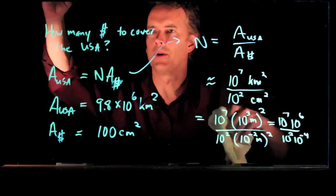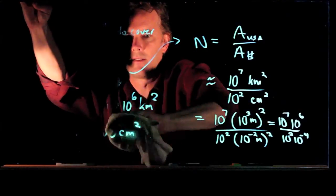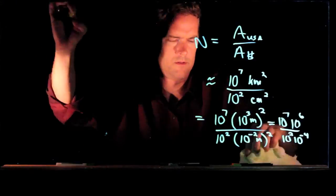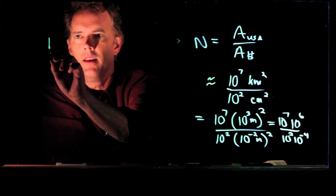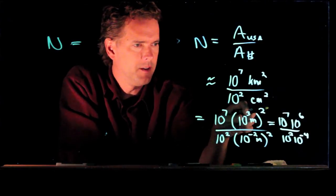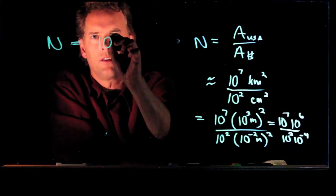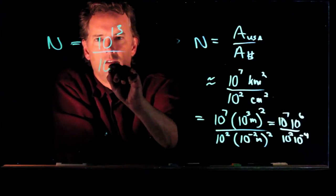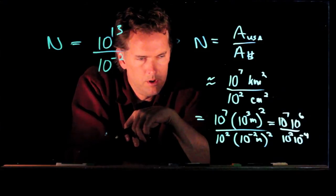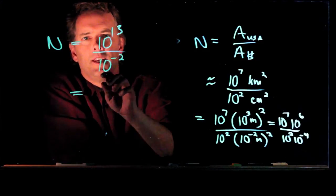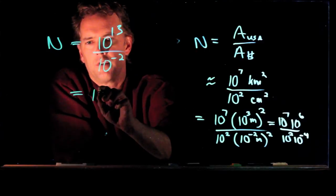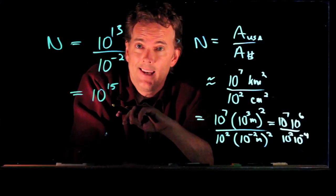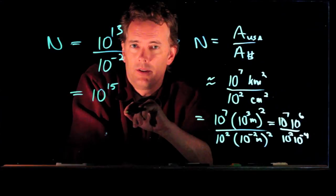And so if we run all these numbers, what do we get? Let's make a little room over here. We get N equals the top, 10 to the 7 and 10 to the 6. That is 10 to the 13. And in the bottom, we had 10 to the 2 and 10 to the minus 4. So that's a 10 to the minus 2. And if I have 10 to the 13 over 10 to the minus 2, that becomes 10 to the 15. How many dollars do you need? You need 10 to the 15 dollars, which is a pretty big number.